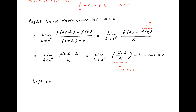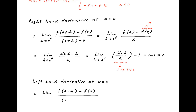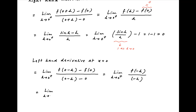Similarly, the left-hand derivative at x equal to 0 is equal to the limit of f(0 minus h) minus f(0) divided by minus h as h tends to 0 from the positive side. This is equal to the limit as h tends to 0 from the positive side of f(minus h) minus f(0), which equals 0, divided by minus h. The numerator is minus sin h plus h and the denominator is minus h.